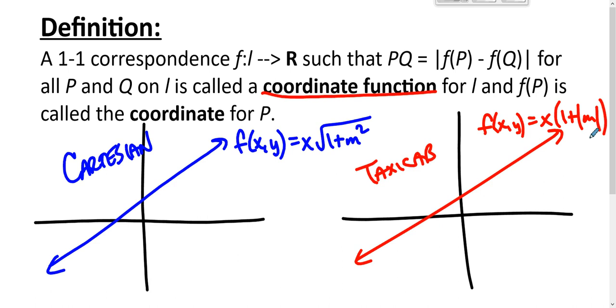You might use f(x,y) = x times 1 plus absolute value of m, and that will take two inputs and generate one output. Because the coordinate function applies to the points on the line, it doesn't apply to the system as a whole. So those are things to keep in mind.